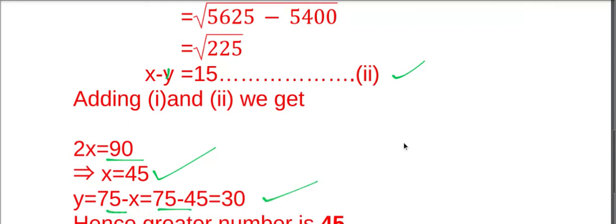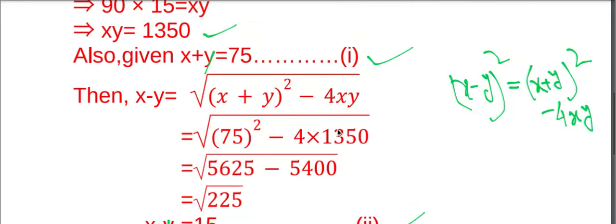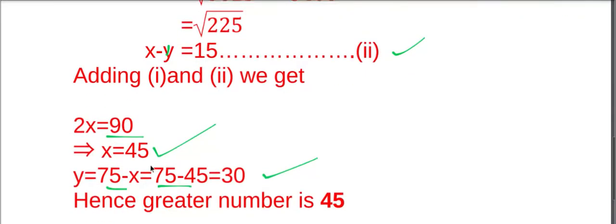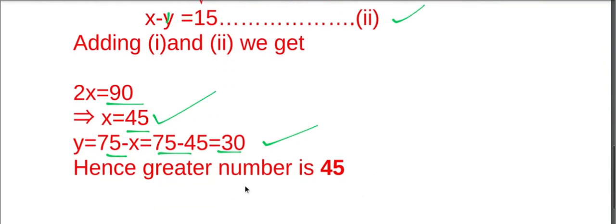Here the question is to find the greater number. The two numbers are 45 and 30, so the greater number is 45. Hence the greater number is 45, so the answer is 45.